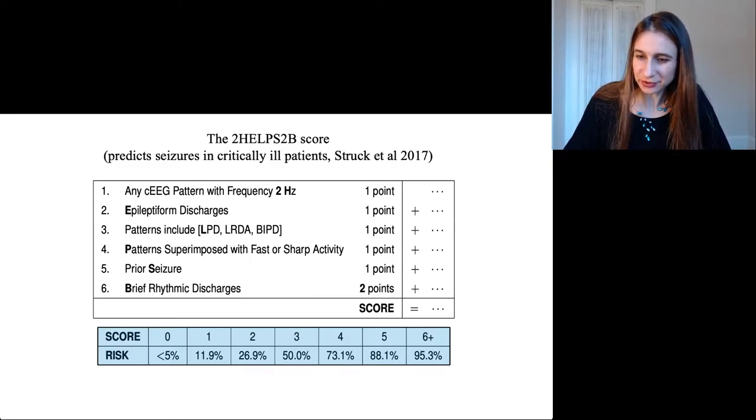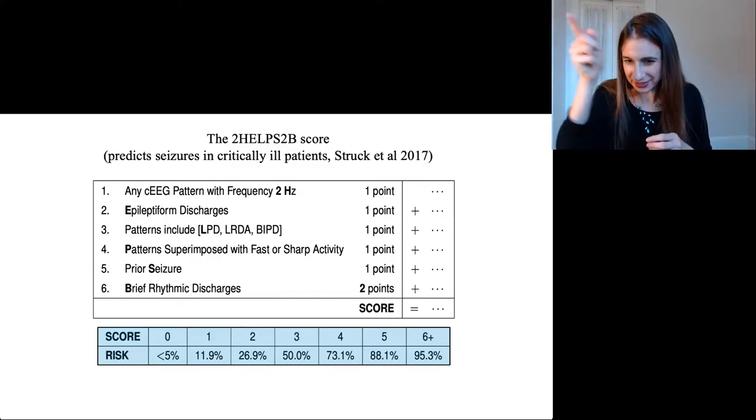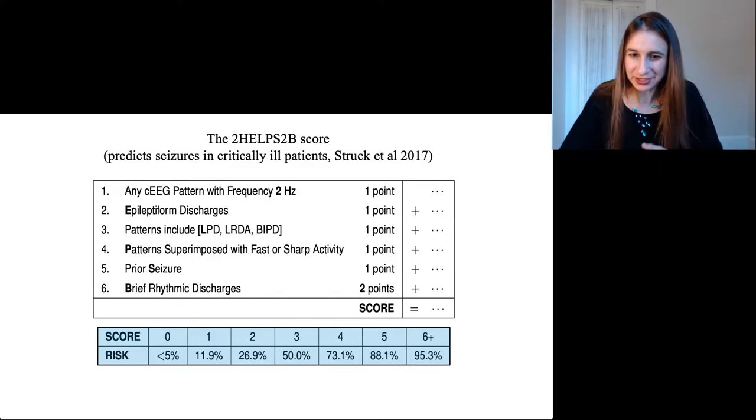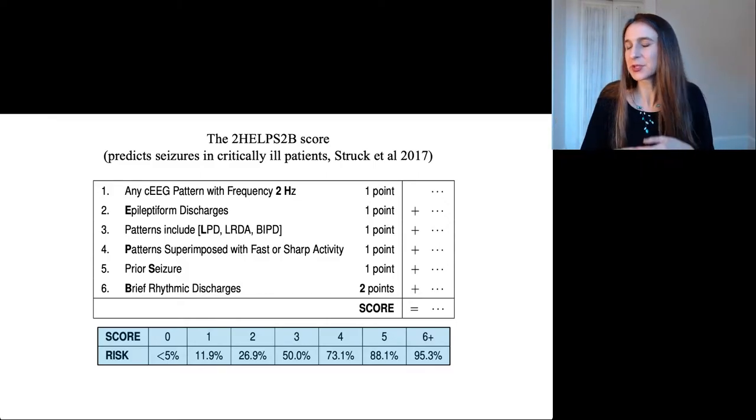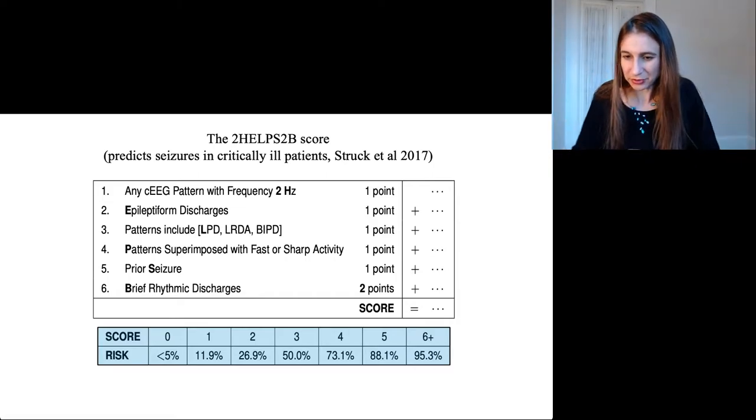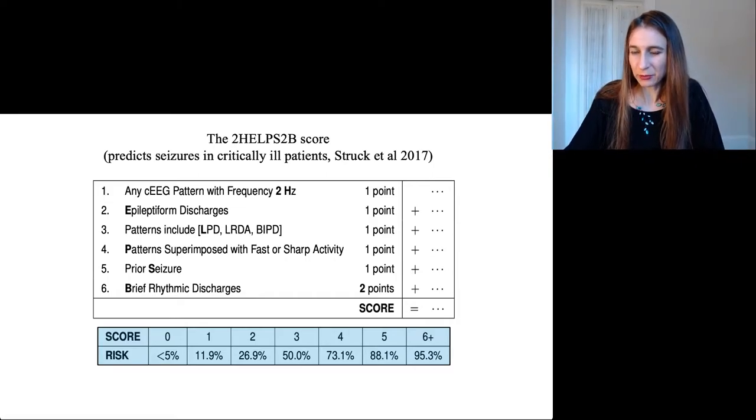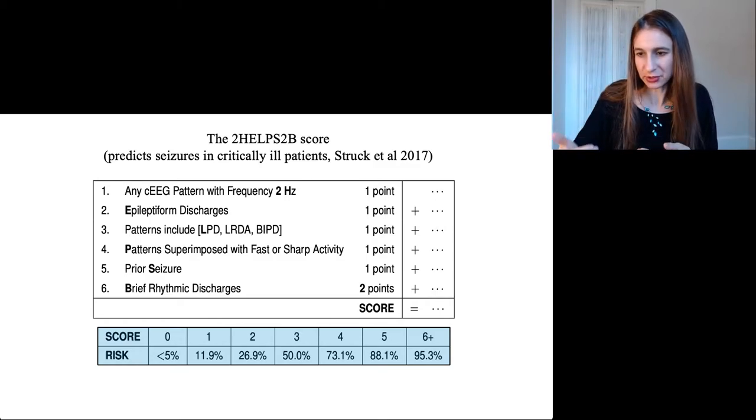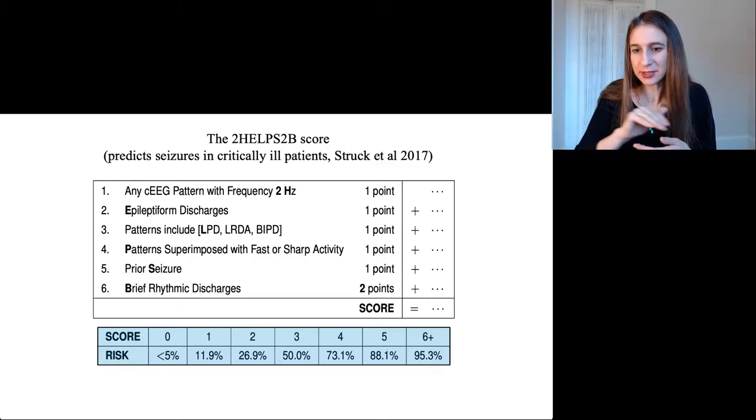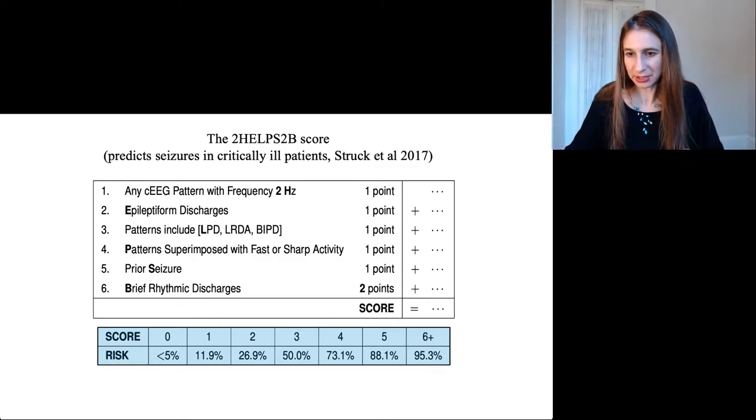The model is called 2-HELPS2B because it's 2-H-E-L-P-S and then there's two points for the B. If you go down and read the bolded letters, the doctors who are using this model can know the full model just by knowing the name because of the abbreviation. Once the patient gets a score, that translates into a risk of seizure using the table at the bottom.